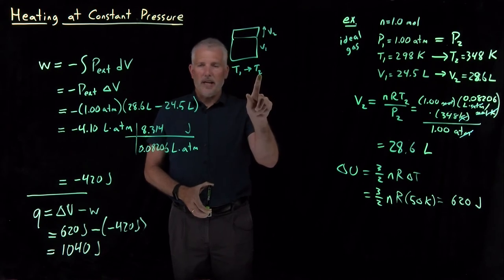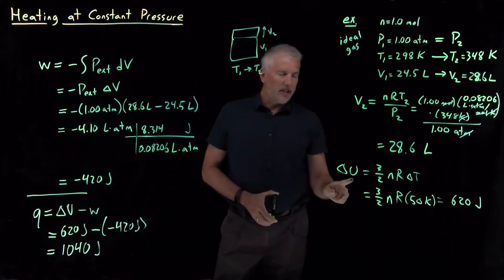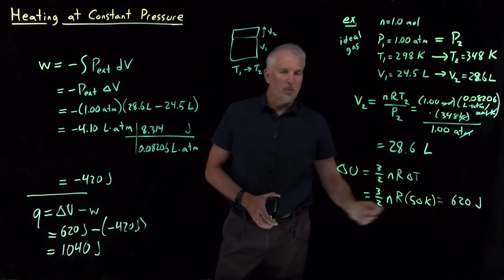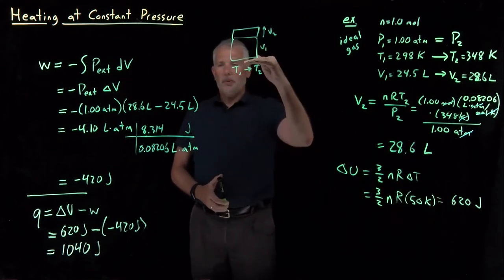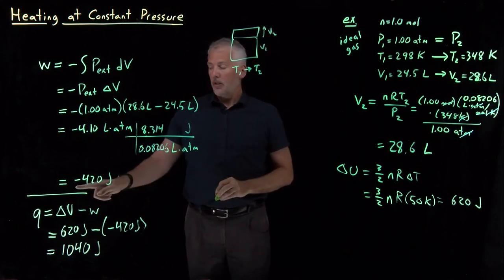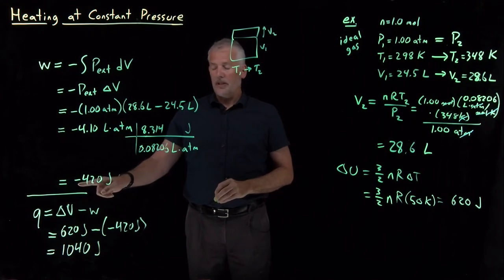Let's make sure we understand what those quantities mean. I've increased the temperature of the gas—I've increased the kinetic energy of the gas. That's the form of energy that the gases have, so the internal energy of the gas increased because of that temperature increase. So 620 joules worth of energy went into raising the temperature of the gas. In the process of heating it up, it expanded, did some PV work, did work on the surroundings, so that's a negative value of W.